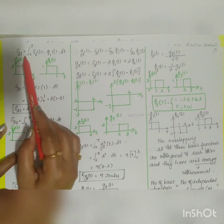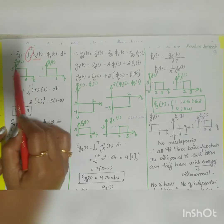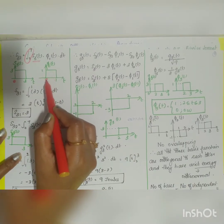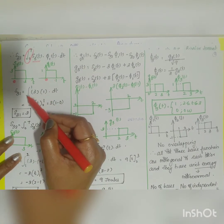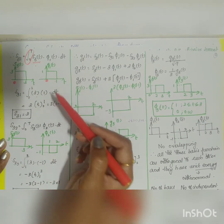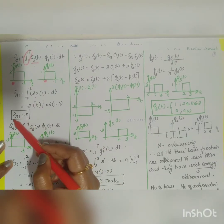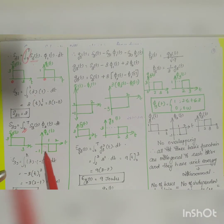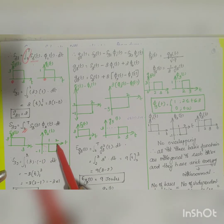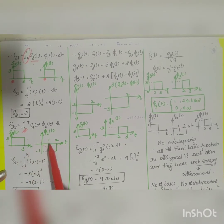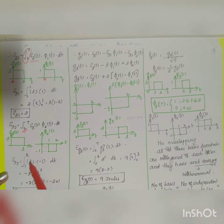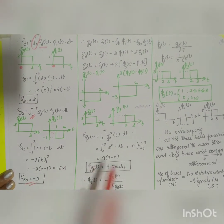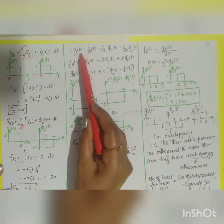For s31: the common interval of s3(t) (0 to 3) and φ1(t) (0 to 1) is 0 to 1, so s31 = ∫₀¹ 3·(1) dt = 3. For s32: the common interval of s3(t) (0 to 3) and φ2(t) (1 to 2) is 1 to 2, so s32 = ∫₁² 3·(−1) dt = −3.